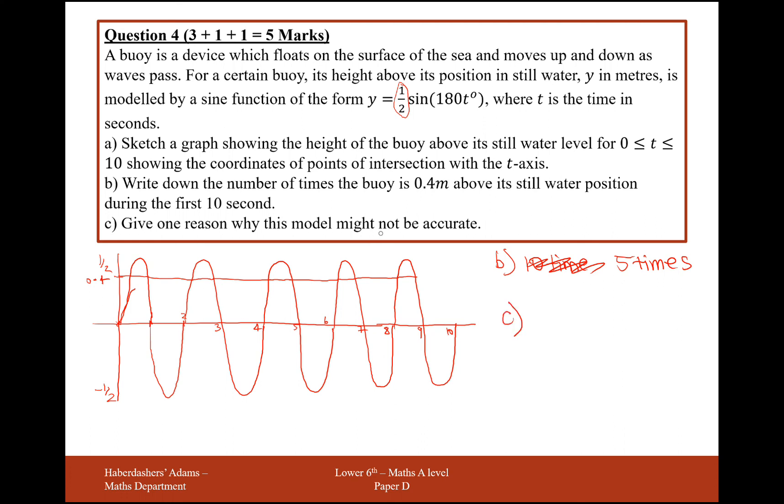Part (c): Give one reason why this model could not be accurate. Waves are of a different height and length. So they're not always straight up and down. Some can be long, some can be short.